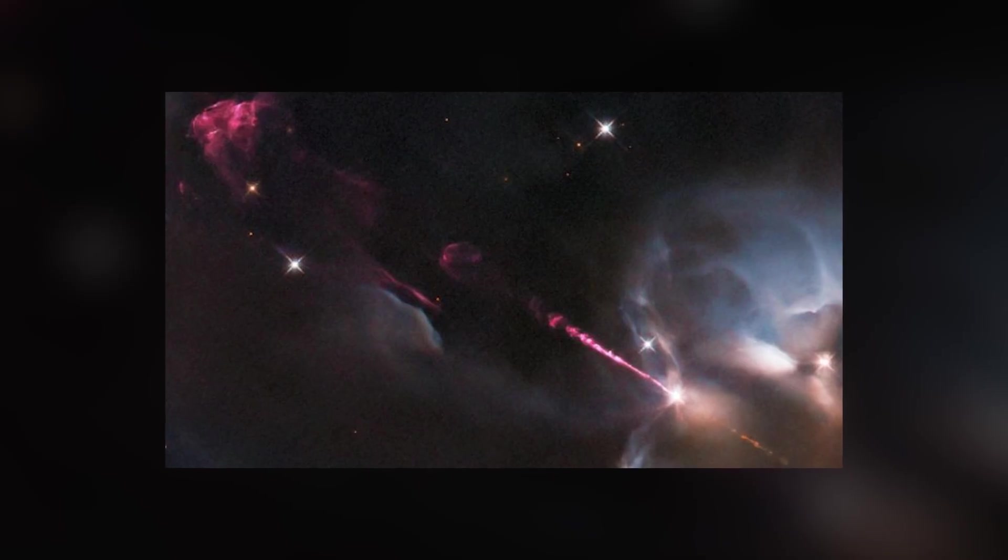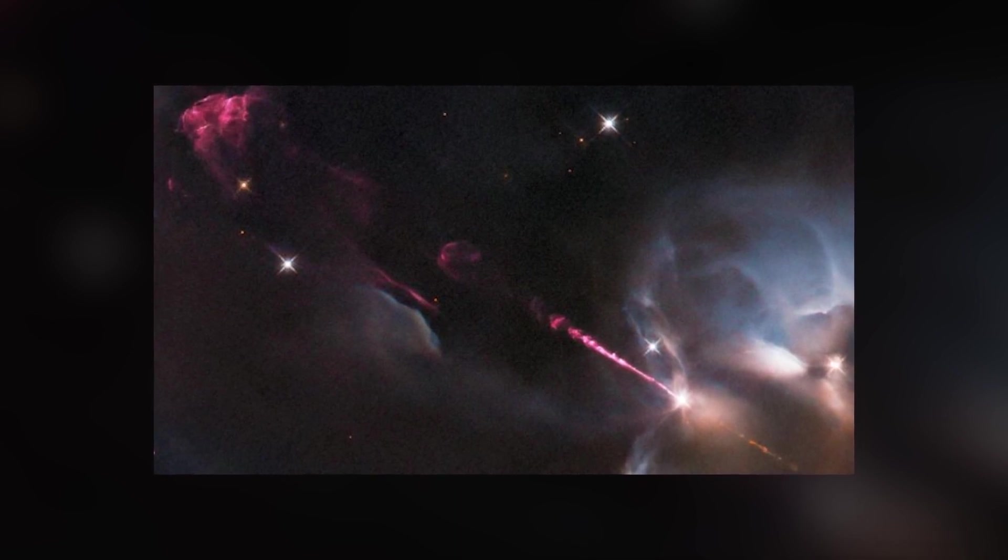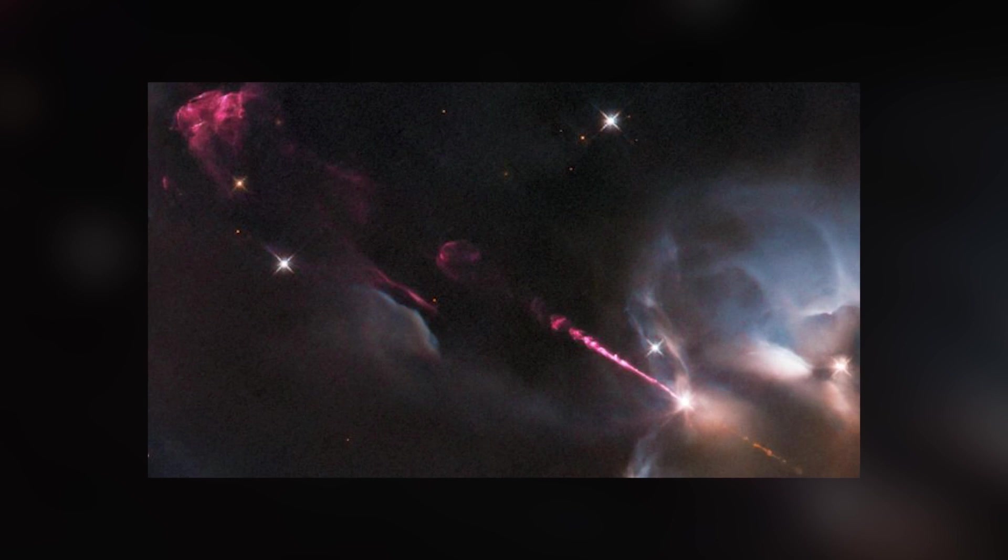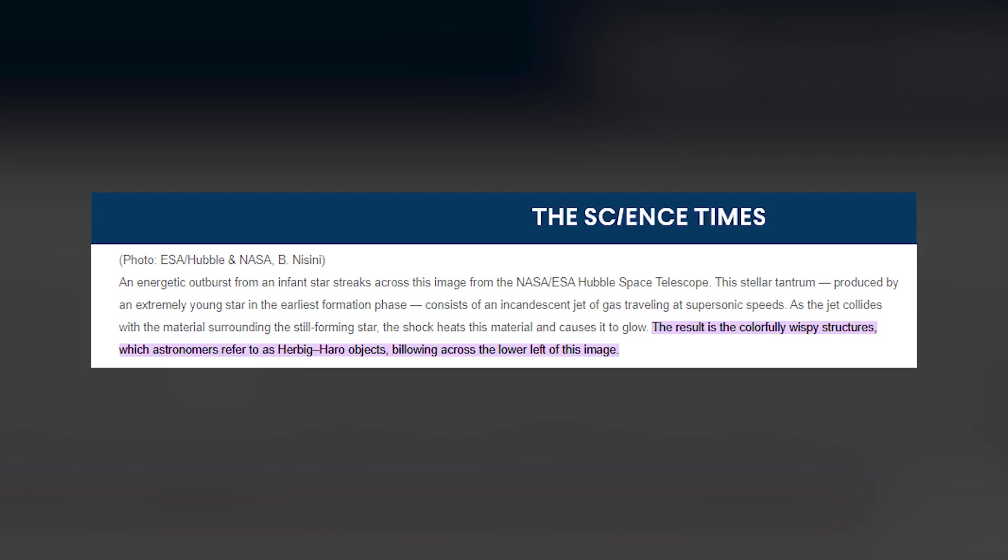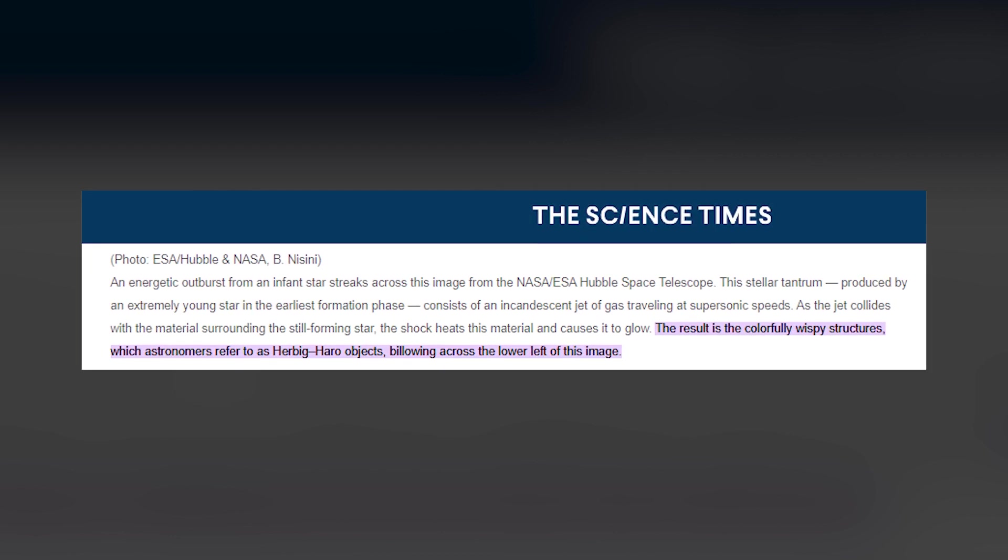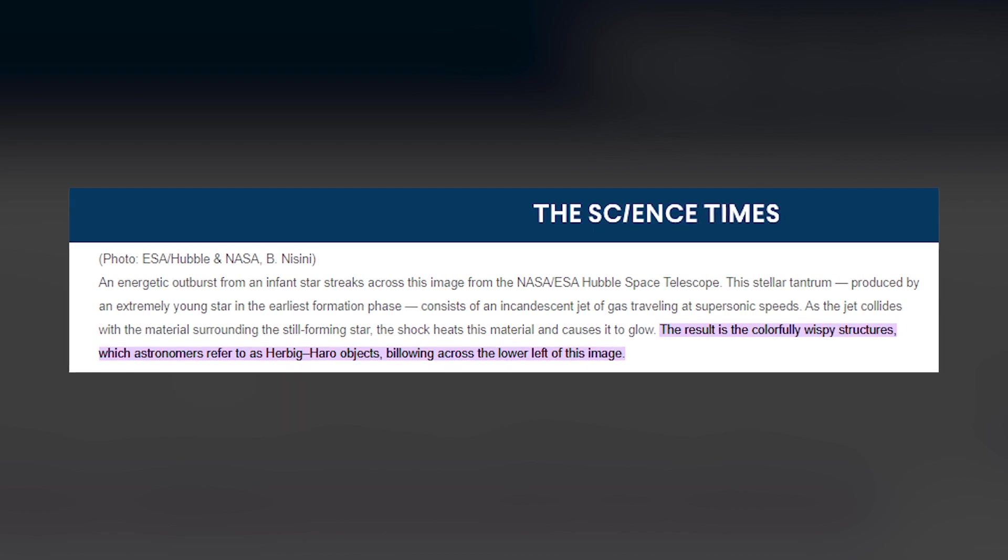The glow you see in the image comes from the jet colliding with gas and dust around the star. Officials at the European Space Agency ESA wrote in an image description on March 7th. The result, the officials added, is the colorfully wispy structures which astronomers refer to as Herbig-Harrow objects.